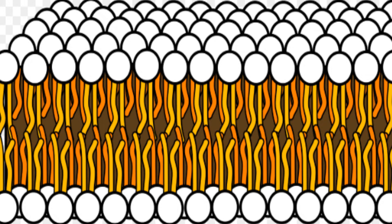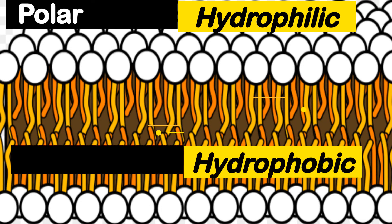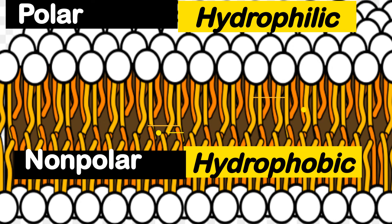A phospholipid has a head and a tail. The head is hydrophilic, or water loving, and is polar. The tail is hydrophobic, or water fearing, and is nonpolar.